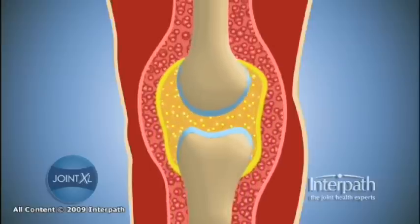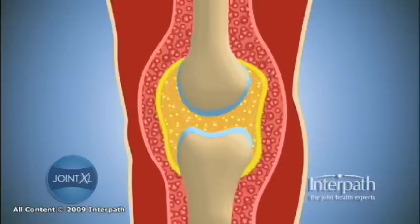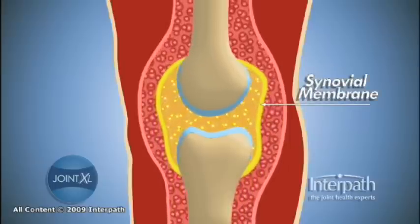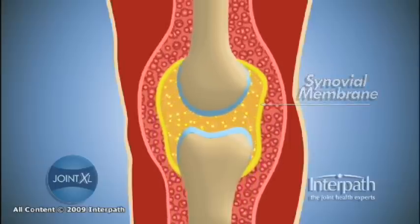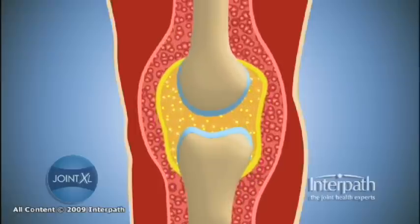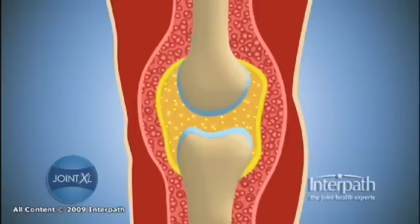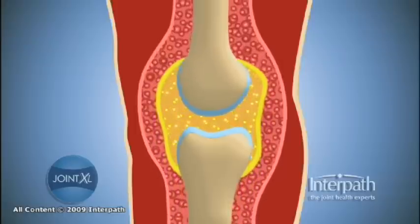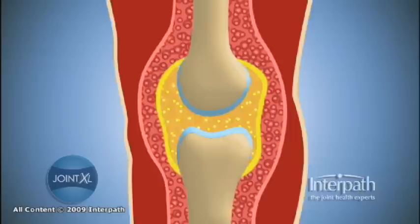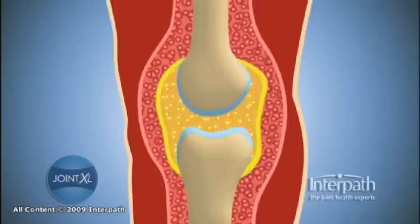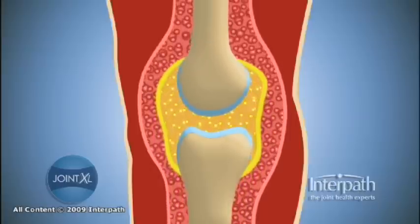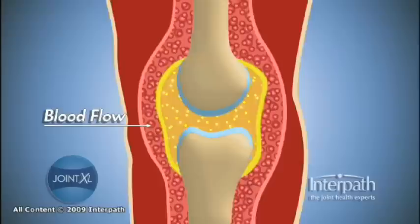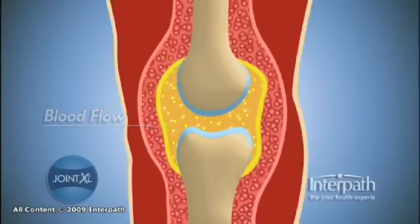The synovial fluid is contained within a fibrous joint capsule which is lined by the synovial membrane. Cells within the synovial membrane called synoviocytes manufacture hyaluronic acid and many other essential molecules, and prevent hyaluronic acid from escaping the joint space. Healthy synovial fluid has very few cells, and blood is routed around the joint capsule but does not leak into the healthy joint.